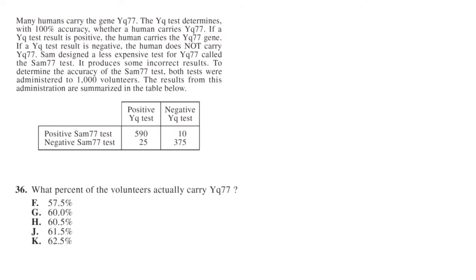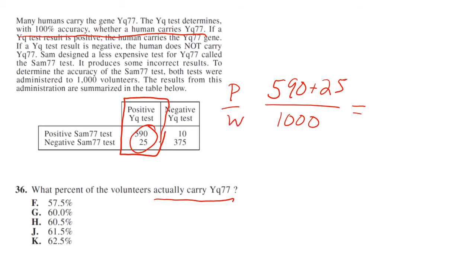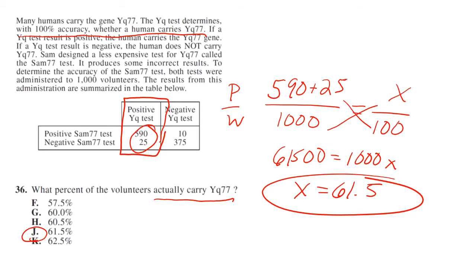What percent of volunteers actually carry YQ77? The YQ test determines with 100% accuracy whether a human carries YQ77. So we need this positive YQ test because that's 100% accuracy. We have 590 plus 25, that's this, over 1,000, that's the number of volunteers. Portion over whole equals what percent out of 100. That's going to cross multiply and we get 61,500 equals 1,000x, so x equals 61.5. There's our answer, choice J.